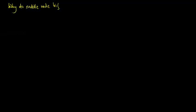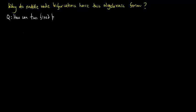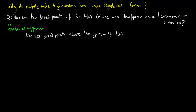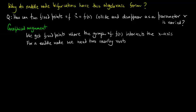Why do saddle node bifurcations actually have this algebraic form? We pose a more concrete question: how can two fixed points of x_dot = f(x) collide and disappear as a parameter r is varied? We first present a graphical argument. We get fixed points where the graph of f(x) intersects the x-axis, and for a saddle node we need two nearby roots of f(x), so locally f(x) should be parabolic.